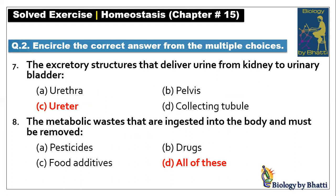Number 7: excretory structures that deliver urine from the kidney to the urinary bladder — so it should be C option. Number 8: the metabolic wastes that are ingested into the body and must be removed — there are three types of waste that are ingested and must be removed — so it should be D option, all of these.